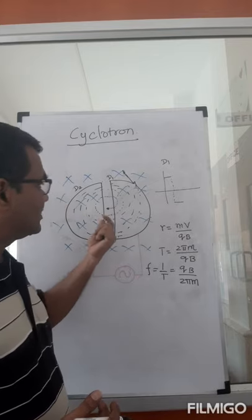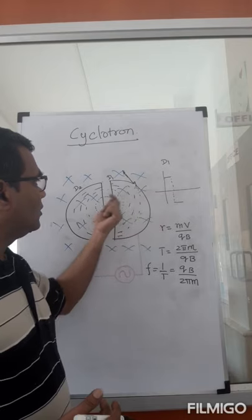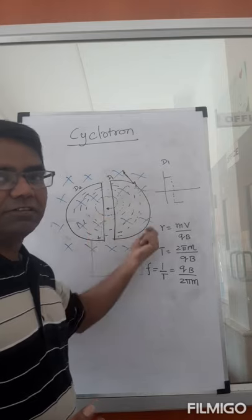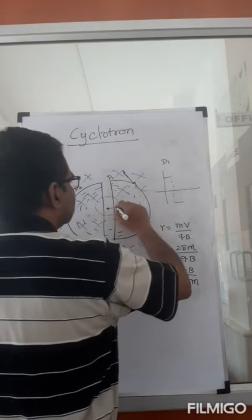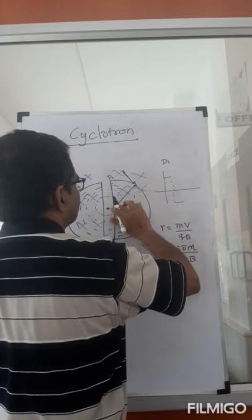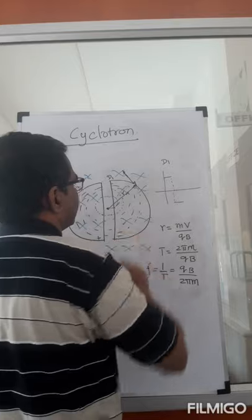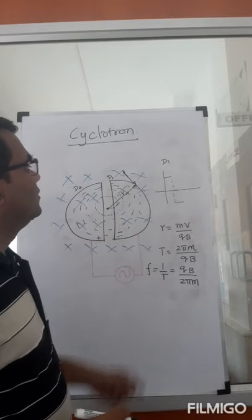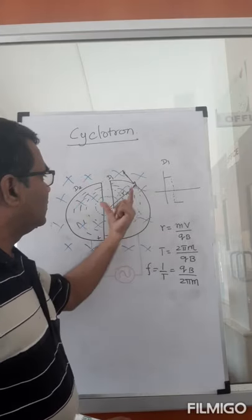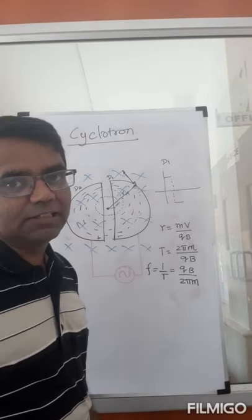As the particle reaches the outer edge of the D and comes out, it will have a radius R — the radius of the disc. So the velocity with which it comes out can be found from R = mv/QB, giving v = QBR/m.